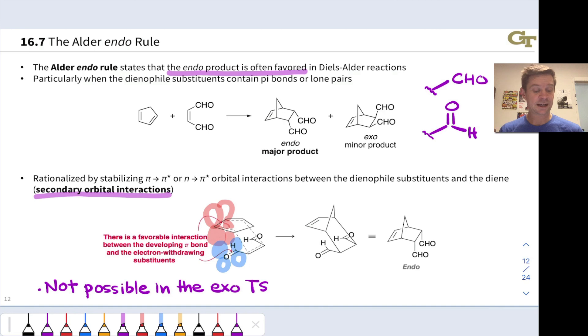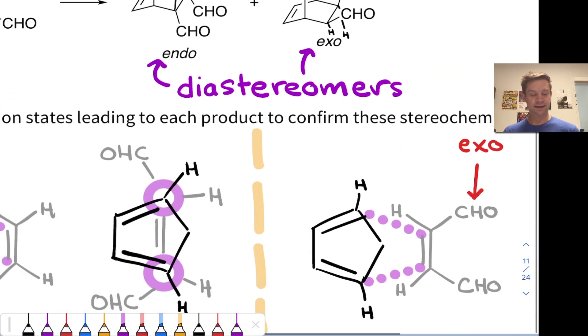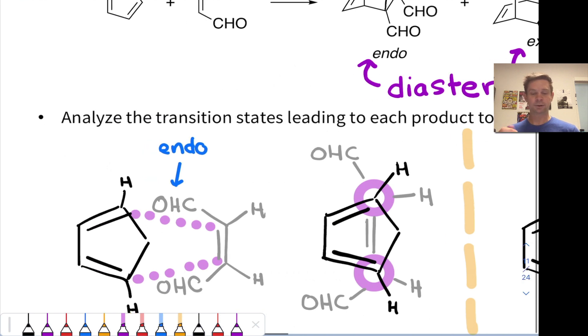One thing to note here is that this kind of secondary orbital overlap, this secondary orbital interaction, is not possible in the exo transition state. Let's back up a slide to convince ourselves of that. In this picture, the secondary orbital interactions happen between the aldehyde groups. Actually, let's look at the Newman projection view. The aldehyde groups and the diene carbons are a lot closer to each other than this picture gives it credit for, but you get the idea.